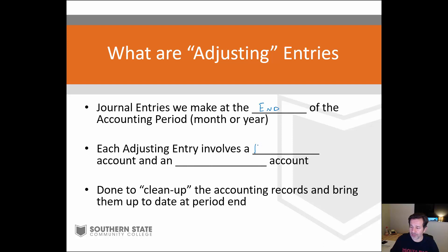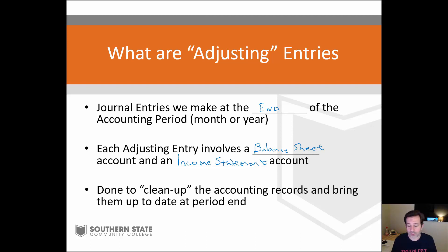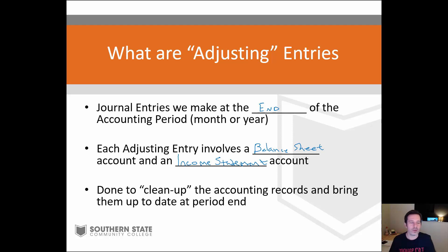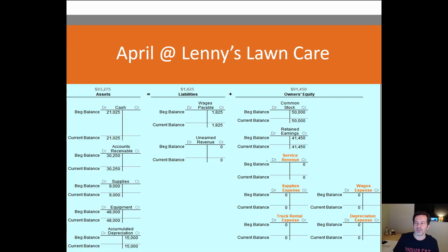Pat yourself on the back if you said the second account is an income statement account. Every adjusting entry involves a balance sheet account and an income statement account. We do these to clean up the accounting records at the end of the period — to reflect things that have happened but aren't yet recorded. These aren't your regular day-to-day transactions; they're end-of-period cleanup entries.